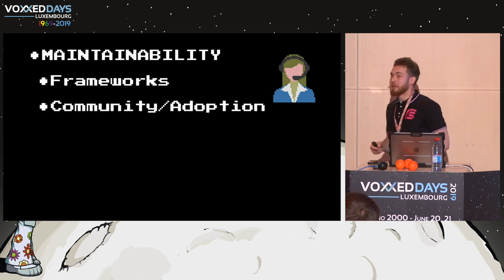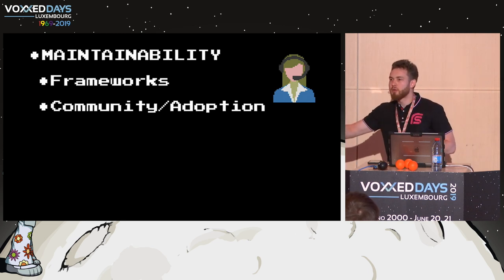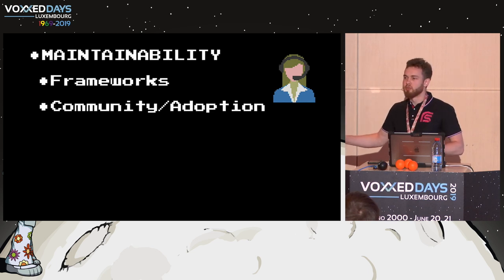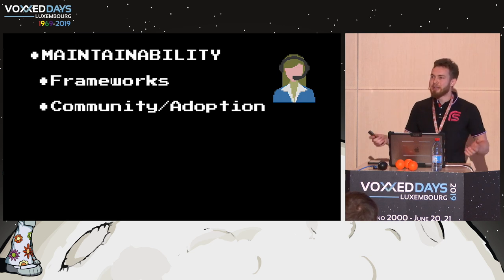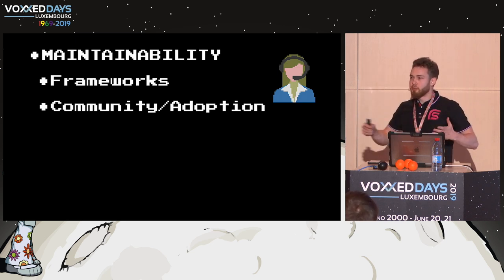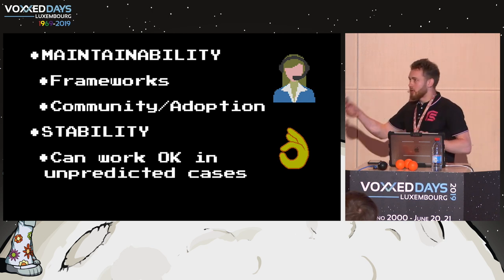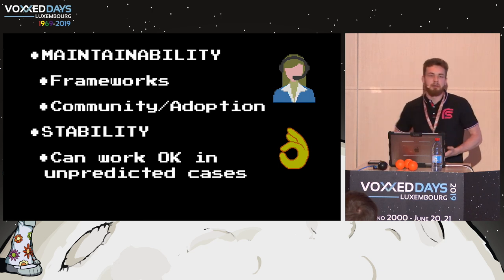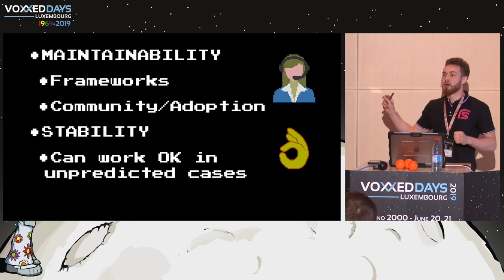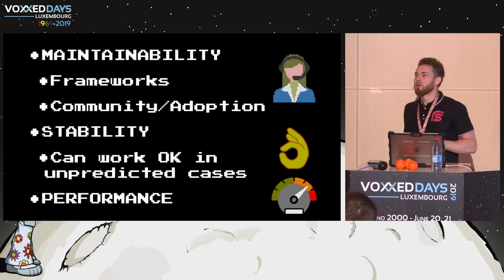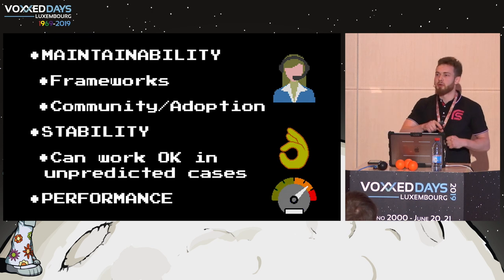How to compare them? First I would look at maintainability - meaning I can Google for a particular solution, find an answer on Stack Overflow, solve my bug or issue. It should be Googleable, supported by many frameworks and languages, with a community that has already adopted the protocol. Then the protocol should provide as much stability as possible from its definition and framework. And finally, the most important for us is performance - lowest latency and highest throughput for our real-time game.